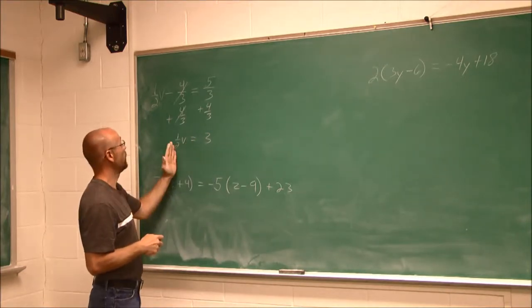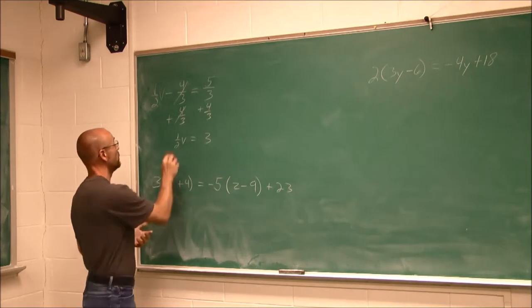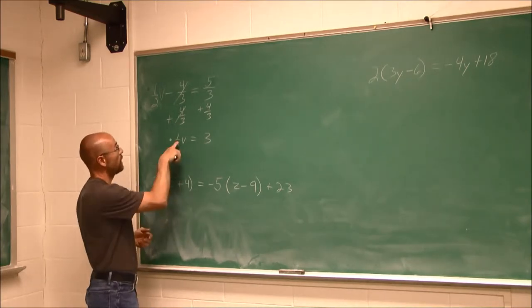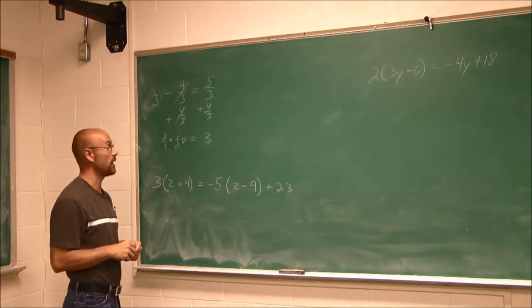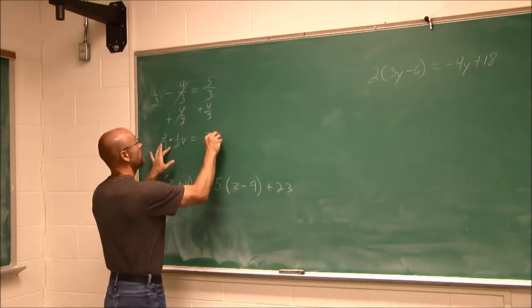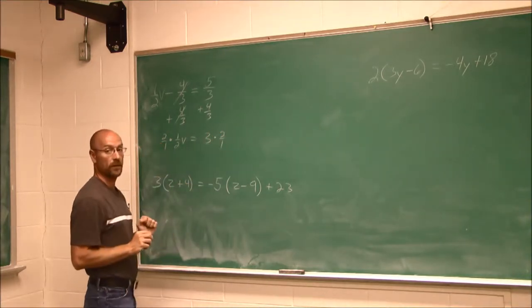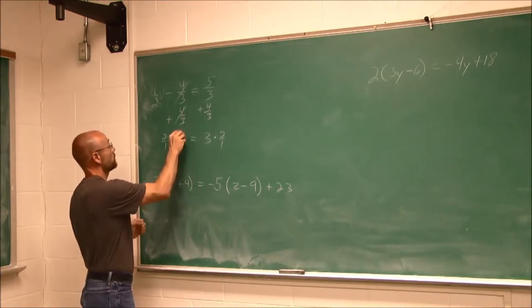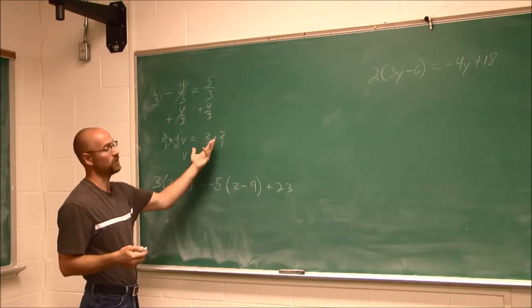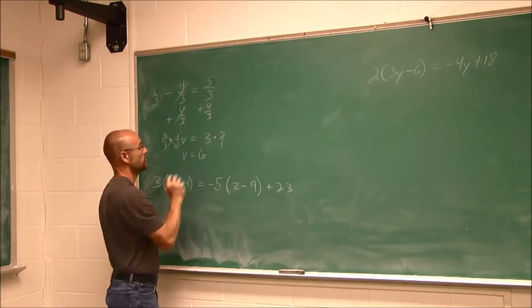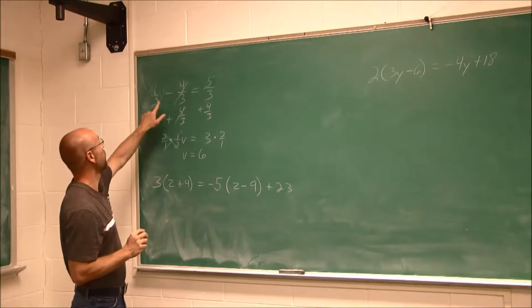So now we have 1 half v equals 3. And I'm going to use that reciprocal. I want to undo this 1 half. So I multiply by its reciprocal. What I do to one side, I do to the other. And now this reduces. v equals 3 times 2 over 1, which is just 3 times 2, 6. And then I can check my work.